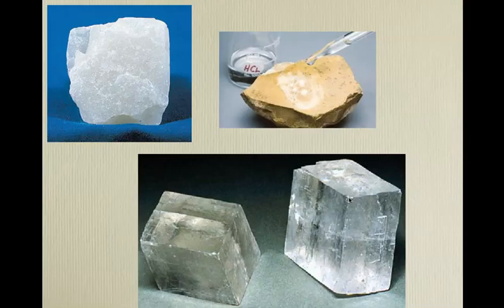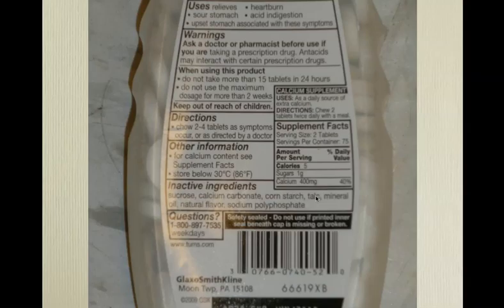Calcite in a nice crystal form has little cubes that aren't quite cubic — triclinic, leaning in three directions, but still a nice crystal. Here are Tums — look at the ingredients: sucrose, calcium carbonate — guess what, you're eating minerals. You're also eating cornstarch and talc, and mineral oil.